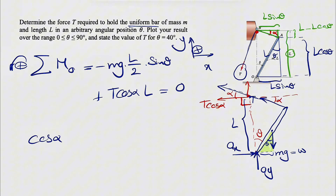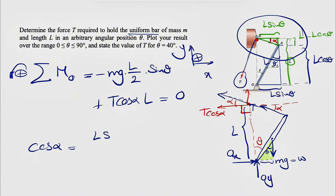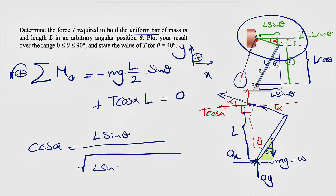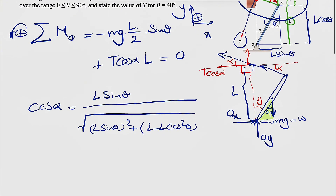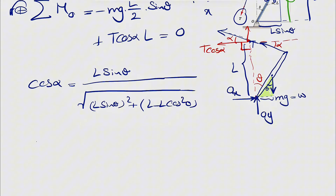To find cos(α), we look at the green right triangle. The adjacent side is L·sin(θ), and we find the hypotenuse using the Pythagorean theorem from the two known sides: the square root of (L·sin(θ))² plus (L − L·cos(θ))². So cos(α) equals L·sin(θ) divided by that square root expression.